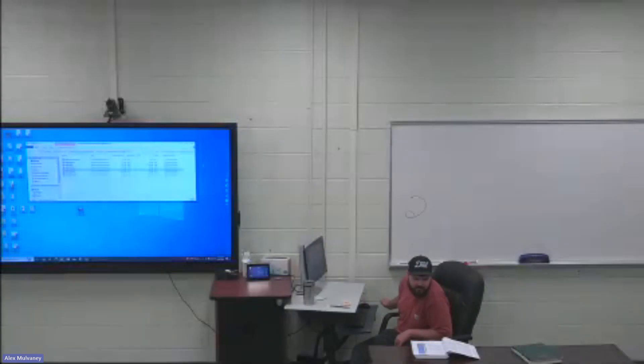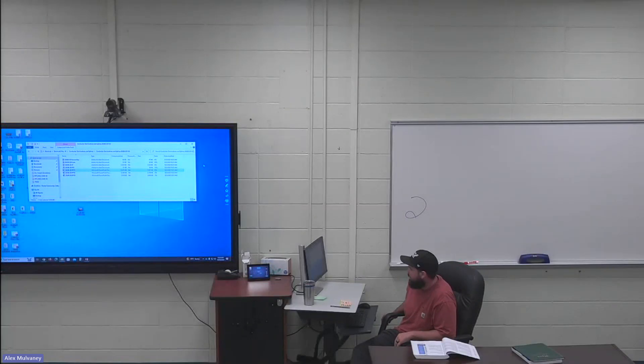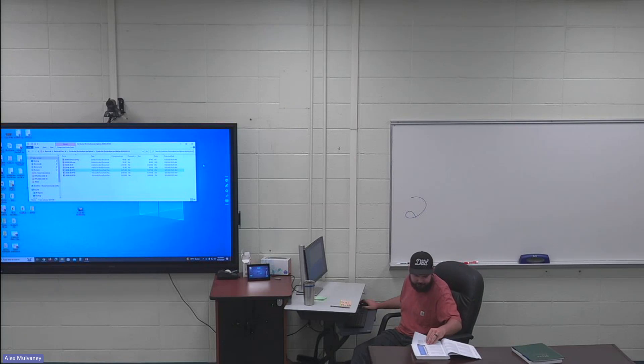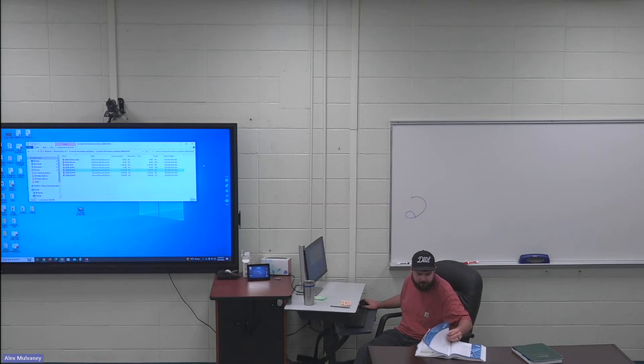Alright, this is Electrical 2, Module 8, Conductor Terminations and Splices, Module Number 26208-20. This is the 10th edition of the NCCER. I'll go a little bit quick through this one because I'm not teaching in front of anyone. Page one.